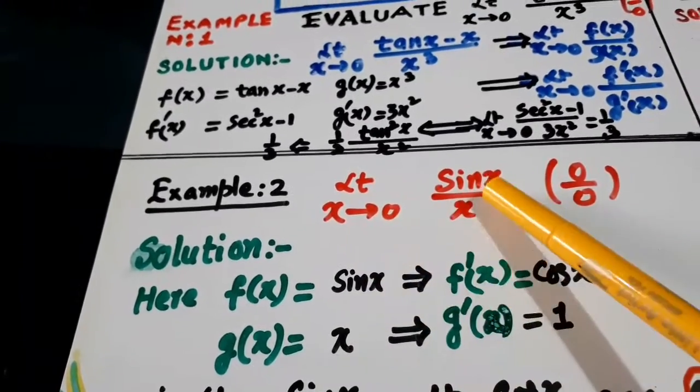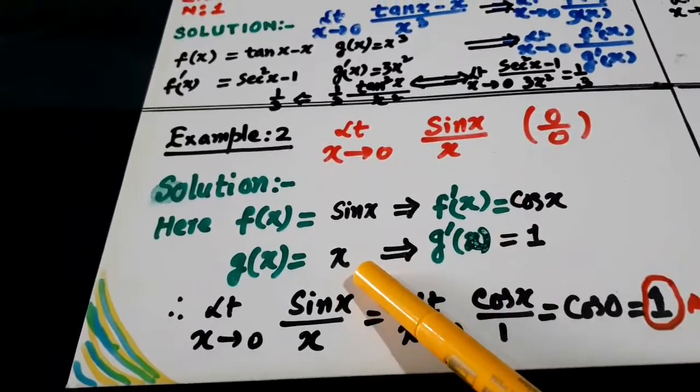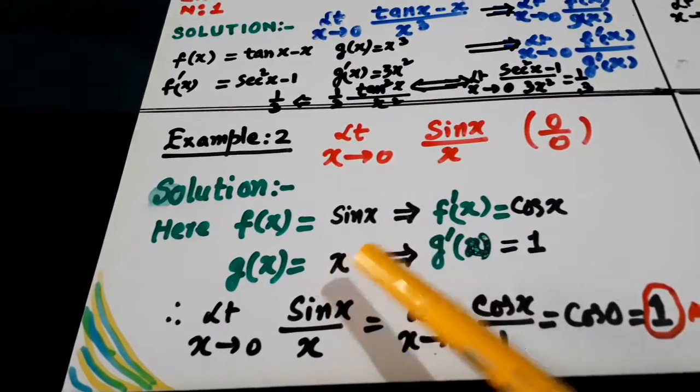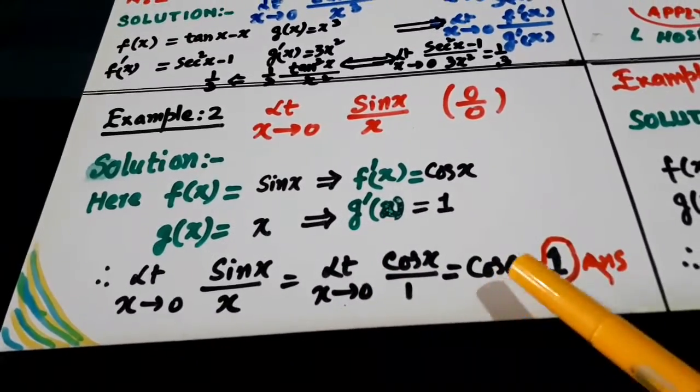Second, limit x goes to 0, sin x over x. Take the derivative of sin x. It is cos x. Take the derivative of g(x). That is x is equal to 1. Put it here. Put x equal to 0. You will get cos 0 equal to 1.